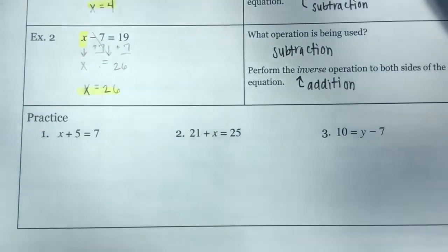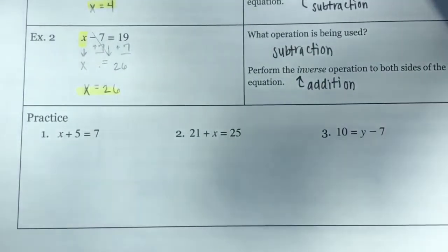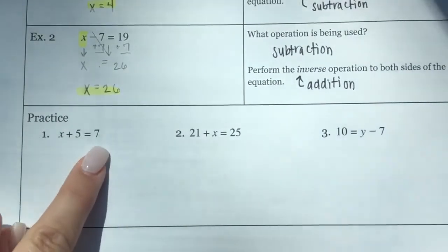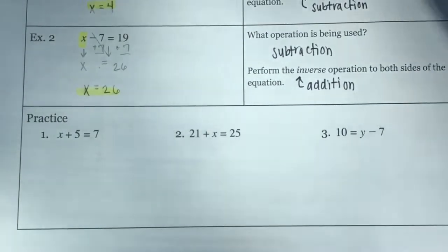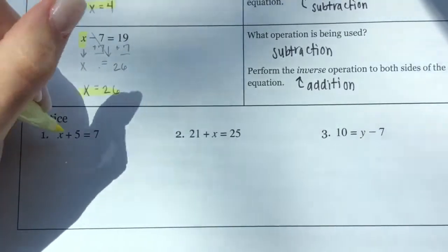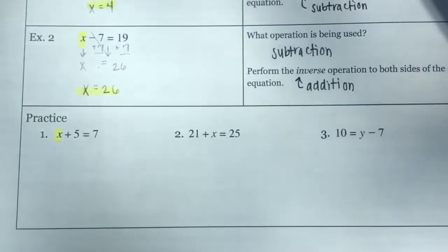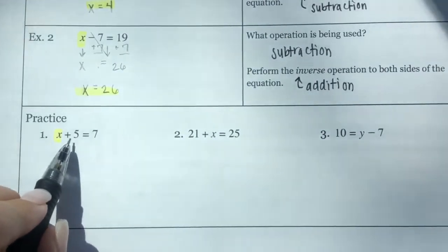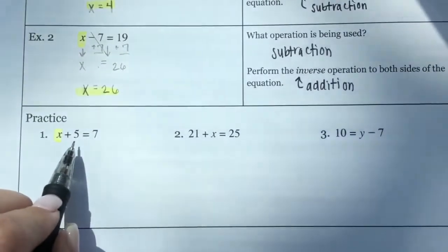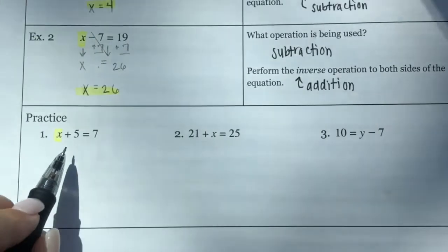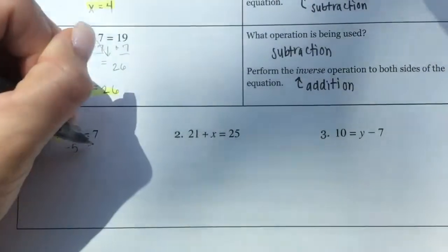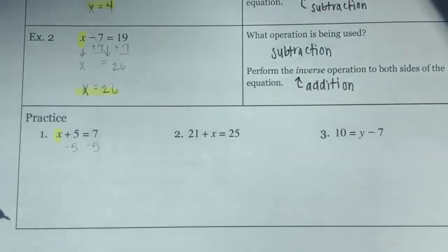Please pause the video and practice these on your own, then continue when you're done to check your answers. For practice problem 1: X + 5 = 7. To get X by itself, I identify that 5 is being added to X, so to undo that I need to subtract 5 from both sides.